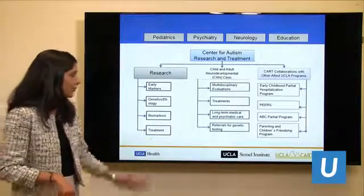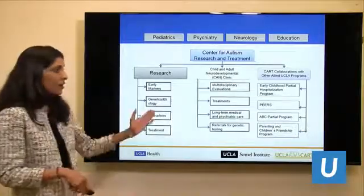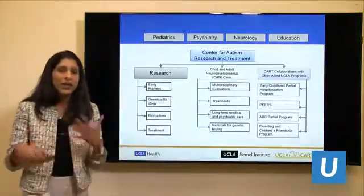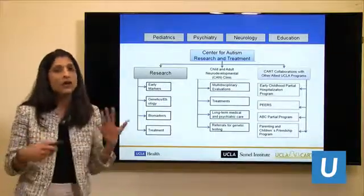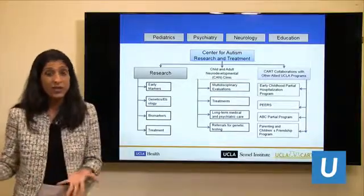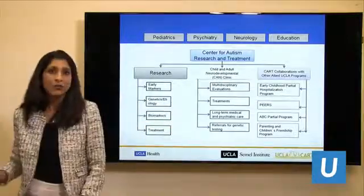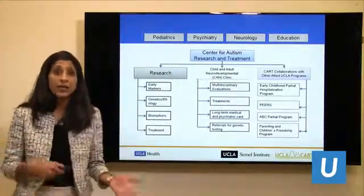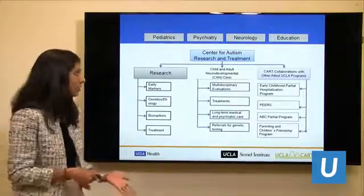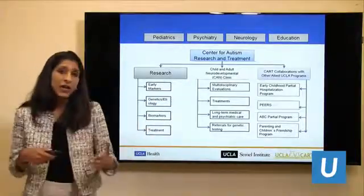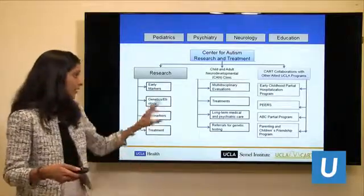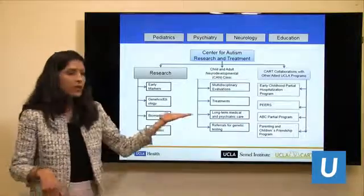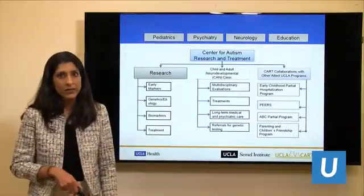I want to highlight that we have a very rich multidisciplinary autism center here at UCLA called CART, the Center for Autism Research and Treatment. CART has three arms: a big research arm largely focused on integrating biology and neuroscience with treatment; a large clinical program providing consultation from a medical standpoint and evaluations for diagnostics and treatment recommendations, called the Child and Adult Neurodevelopmental Clinic; and we collaborate quite a bit with intervention programs including the Early Childhood Partial Hospitalization Program and PEERS, a social skills training for adolescents with autism — and now a preschool PEERS as well.